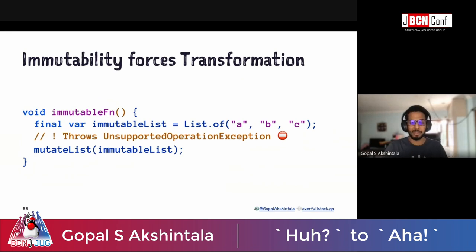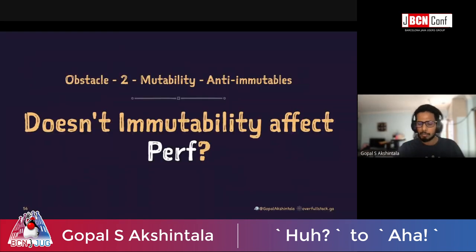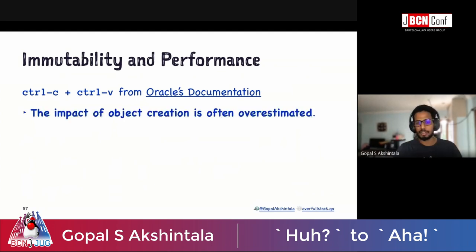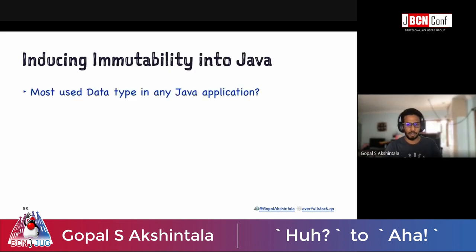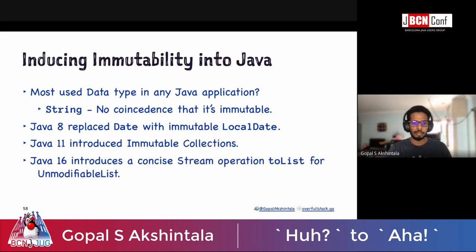As long as you use immutability, you have no choice — the moment you try to mutate, you get an exception right in your face. There's a performance concern about object creation, but the Oracle documentation states: 'The impact of object creation is often overestimated and can be offset by decreased overhead due to garbage collection.' Java is also doing its part: String is immutable; Java replaced Date with immutable LocalDate; Java 11 introduced immutable collections; and Java 16 has toList() to get an unmodifiable list directly from a stream.